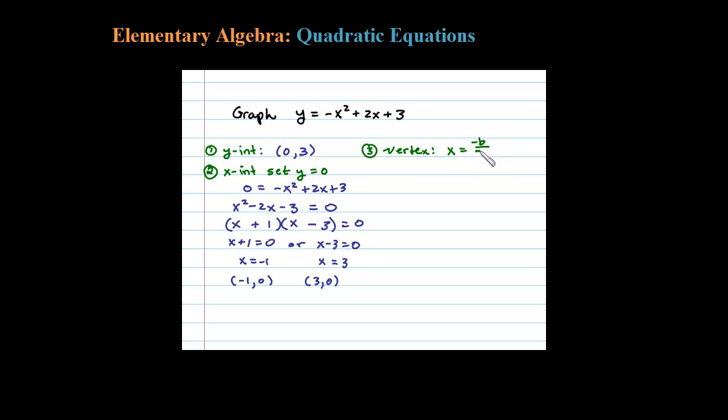The vertex formula is x = -b/(2a), the same a and b as in the quadratic formula. In this case, a = -1, b = 2, and c = 3. So -b/(2a) = -2/(2×-1) = -2/(-2) = 1. That's the x-value.